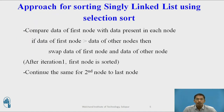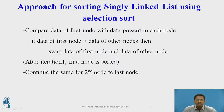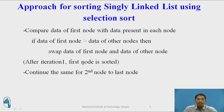This is the approach for sorting a singly linked list using selection sort. Compare the data of the first node with the data present at each node. If the data of the first node is greater than the data of the remaining nodes, then swapping is done. After one iteration, the first node is getting sorted. Continue the same for the second node to the last node, and we will continue this procedure till all the nodes of the singly linked list are getting sorted.